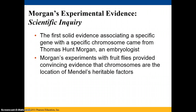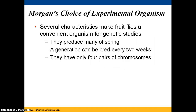Thomas Hunt Morgan was an embryologist who came up with the first evidence that actually associated a specific gene with a specific chromosome. Morgan's experiments with fruit flies provided convincing evidence that chromosomes are indeed where Mendel's heritable factors are located. He chose fruit flies because they're very convenient for genetic studies — they produce many offspring every two weeks and they only have four pairs of chromosomes, which makes it relatively easy to look at certain traits.